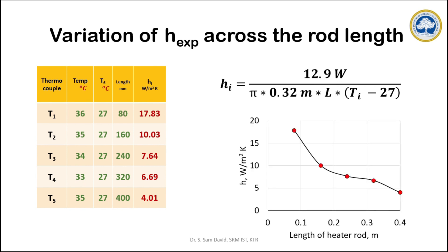This can be plotted with the length of the heater rod on the x-axis and the calculated heat transfer coefficient on the y-axis to obtain a graph showing the variation.